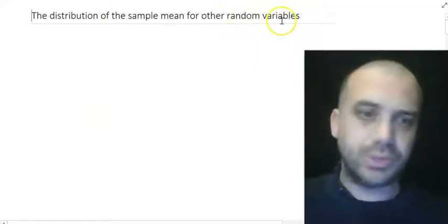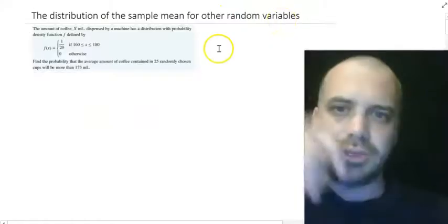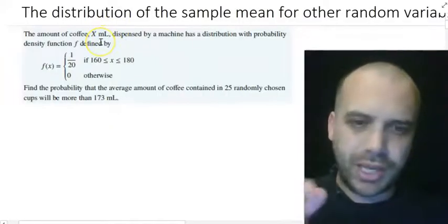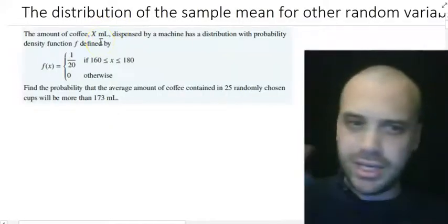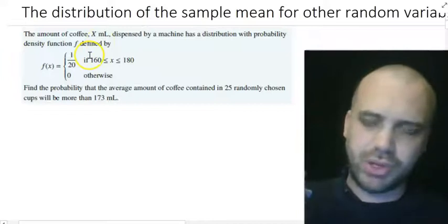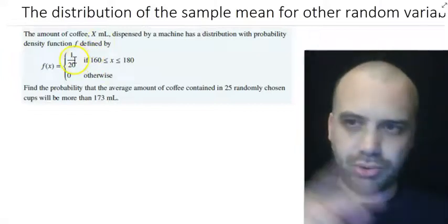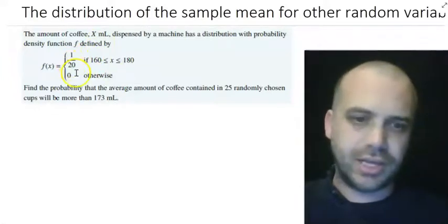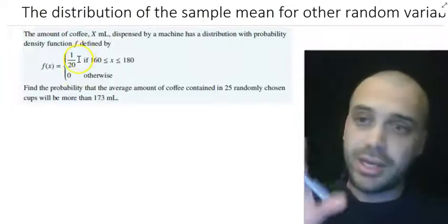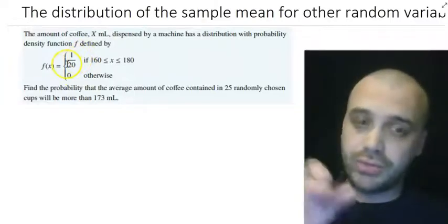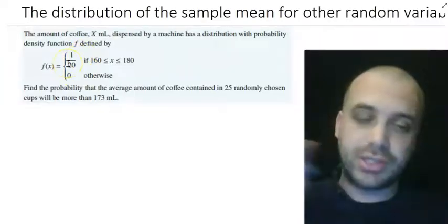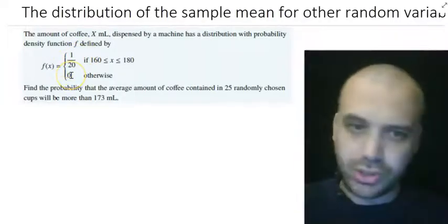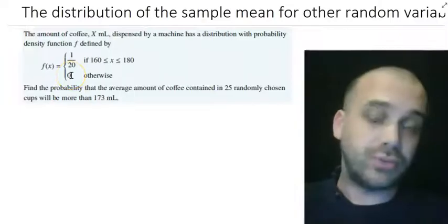So that's what we're doing here. The question we're tackling has a population defined by a probability density function. Actually, now that I say it, it is a uniform distribution — 1 over 20, a constant, so yes, it is a uniform distribution.